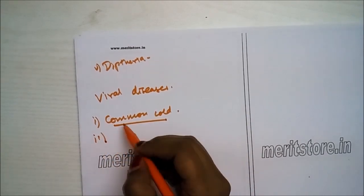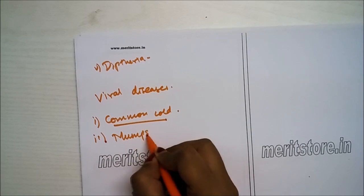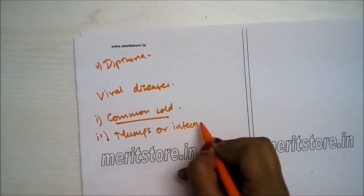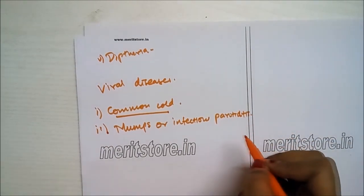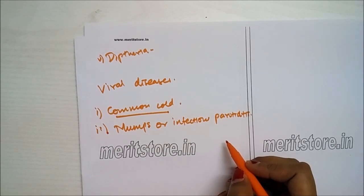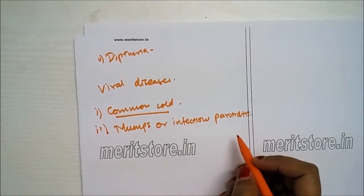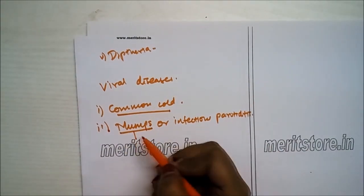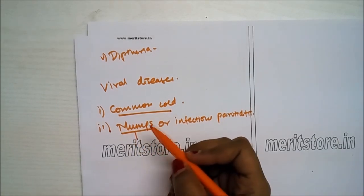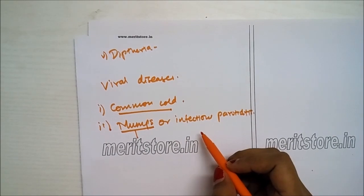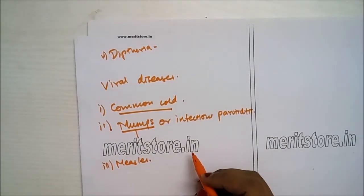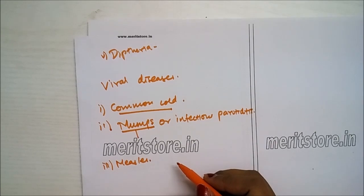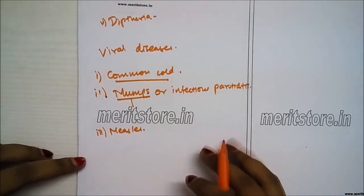Second is mumps or infectious parotiditis, caused by a paramyxovirus (RNA virus) or myxovirus parotiditis. Mumps causes inflammation of the parotid glands behind the ears. The MMR vaccine is used against measles, mumps and rubella. Third is measles or rubella disease, a highly infectious childhood disease occurring between 3 to 6 years of age, caused by the rubella virus or Polynosum morbillorum.